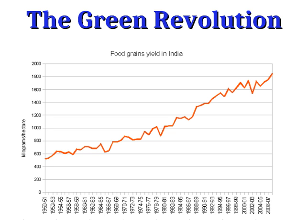This allowed a big expansion in the yield of some of these crops. What you see on that diagram is the yield per acre of food grains in the country of India, which was one of the major countries the Green Revolution was launched in. And you can see a big increase in yield from the 1950s up through the present day.